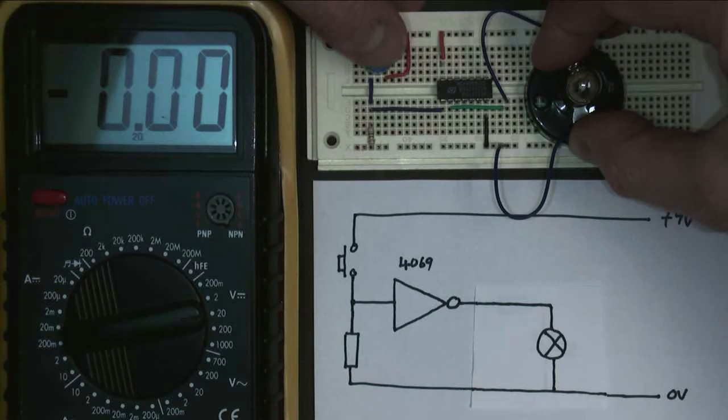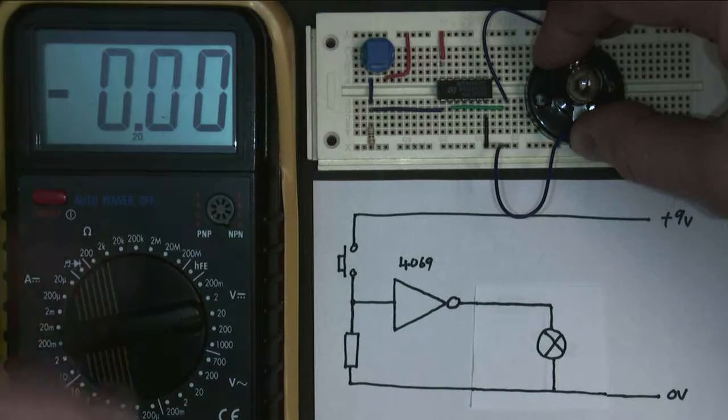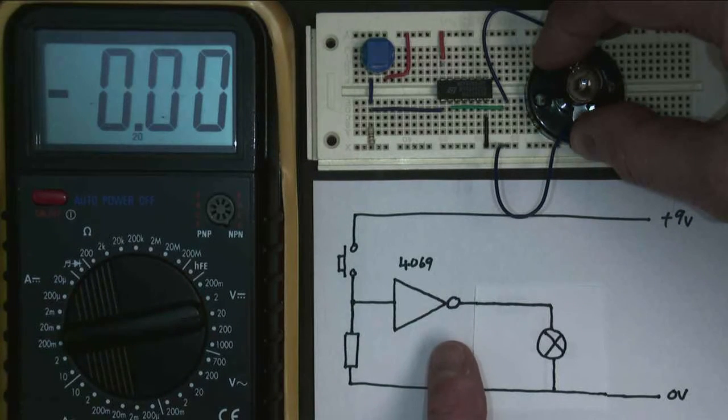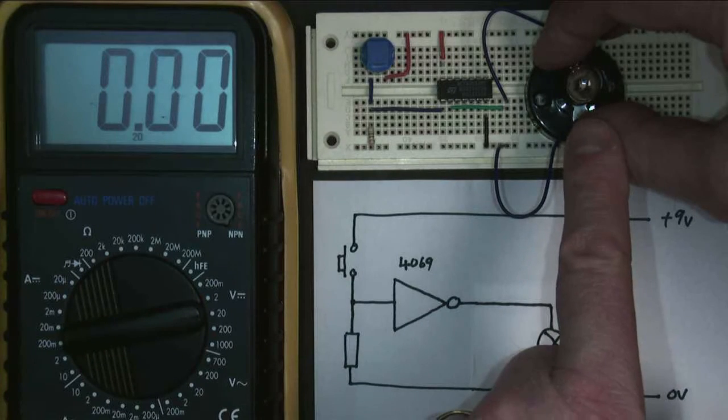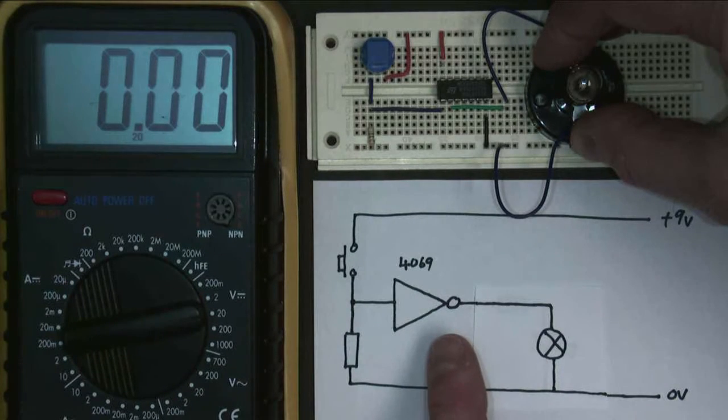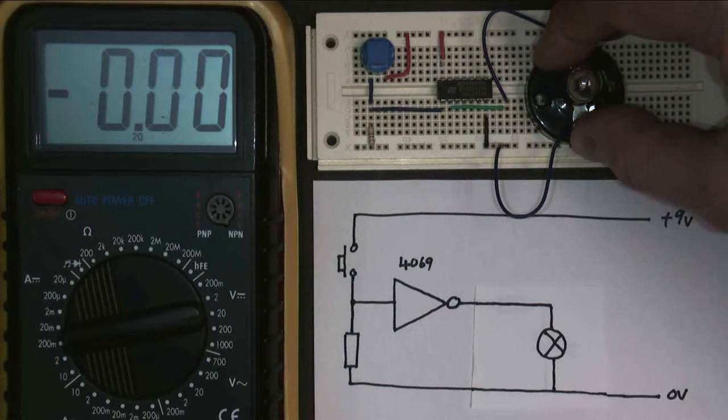Press the button and nothing happens. The reason nothing happens is because the logic gate cannot provide enough current for the bulb. The logic gate can only provide a few milliamps. The bulb takes hundreds of milliamps. So we have a problem.